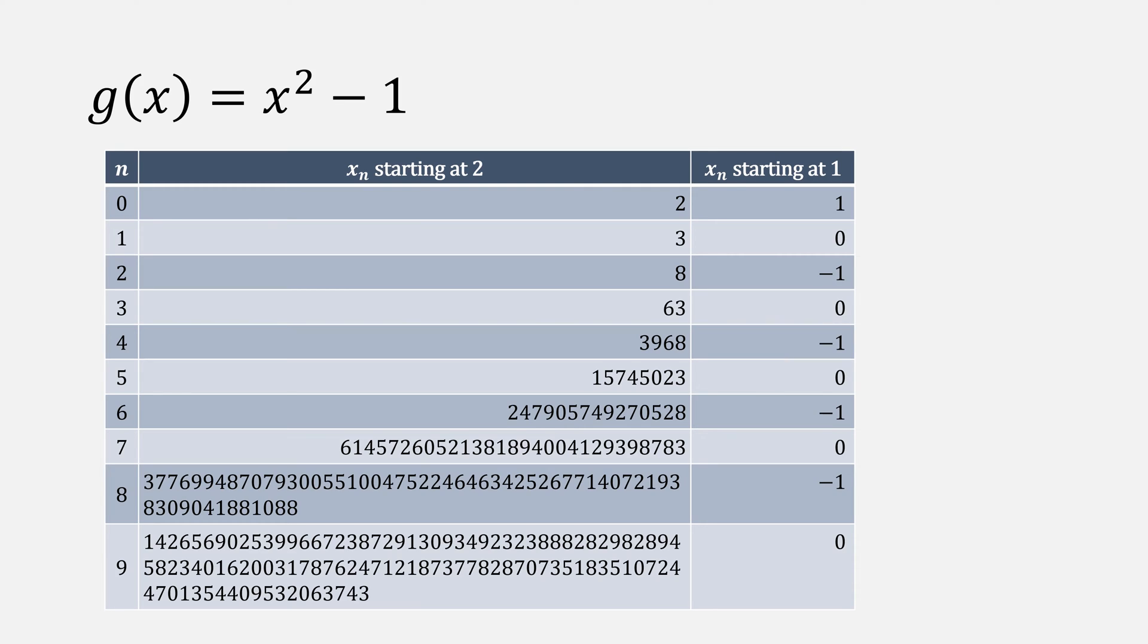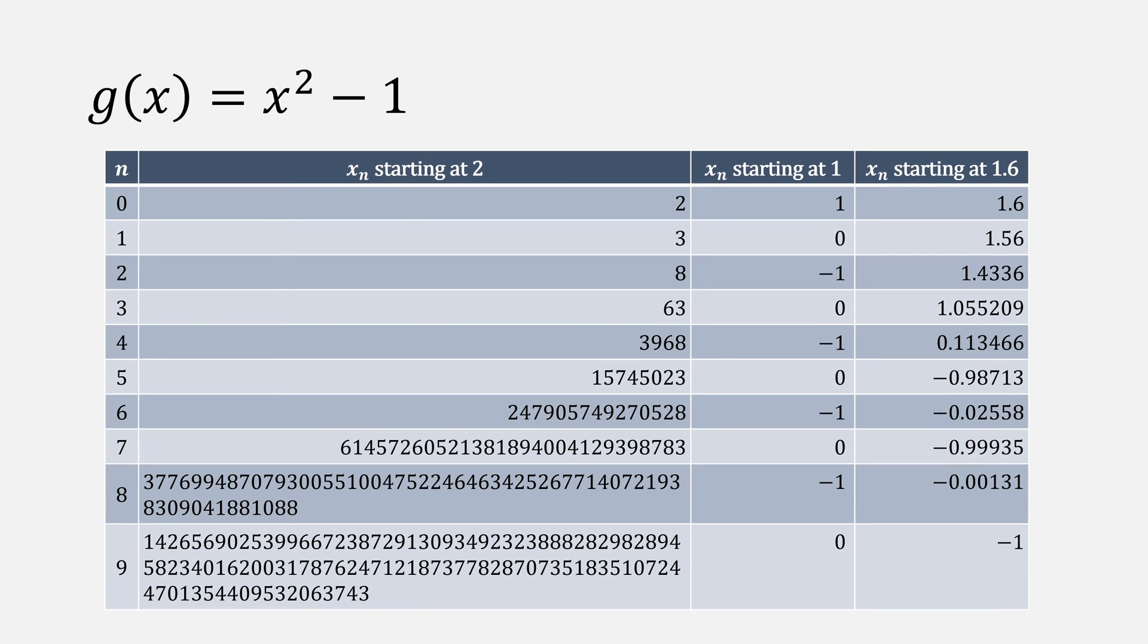If we start at 1, then our function will eventually start bouncing between 0 and negative 1. And even if we start very close to the root, say for example 1.6, this also causes our function to diverge.